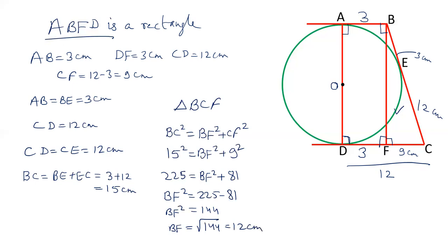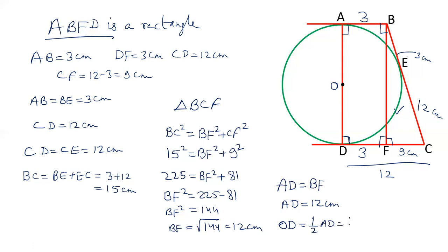We have proved that ABFD is a rectangle, and therefore AD is equal to BF. The length of BF is 12, so AD is also 12 cm. AD is the diameter of the circle, and we have to calculate the radius. The radius is half of AD, so half of 12 is 6 cm. The radius of the circle is 6 cm.